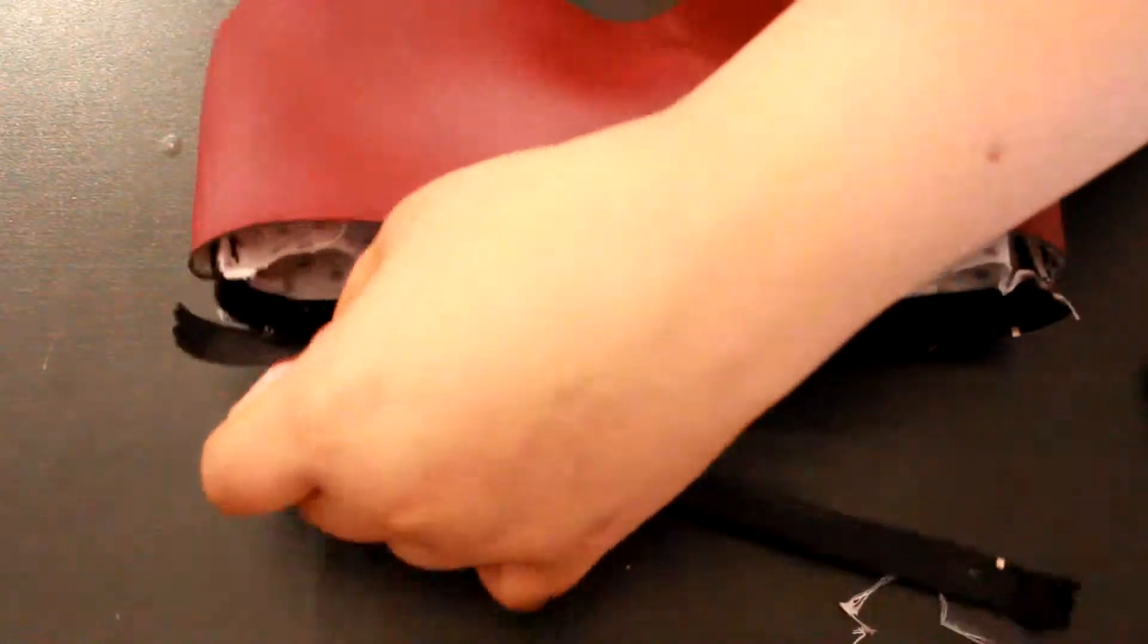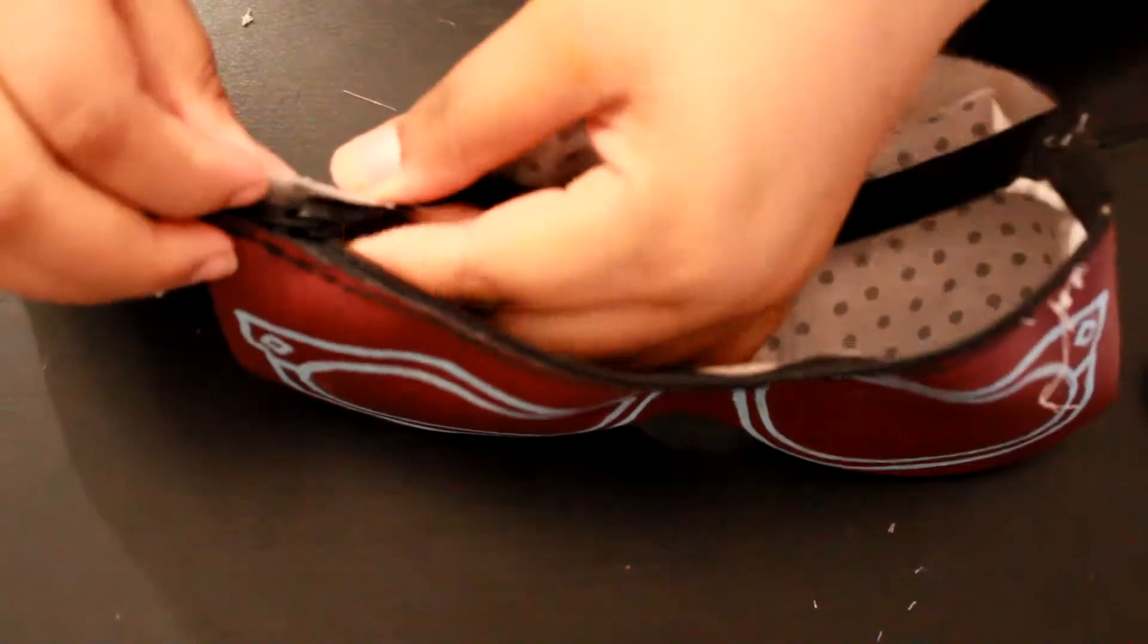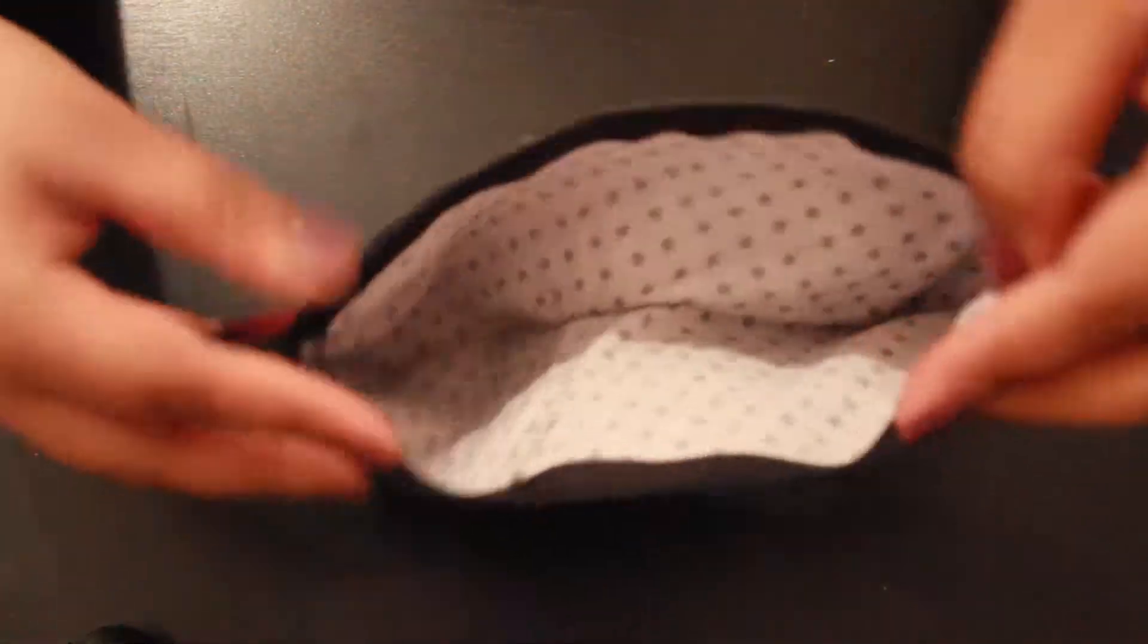So once that's done, you can go ahead and sew on the other side of the zipper. This is what it looks like completely sewed.